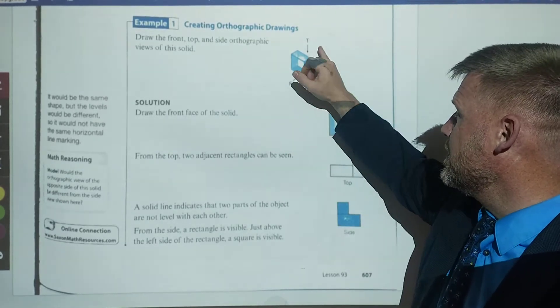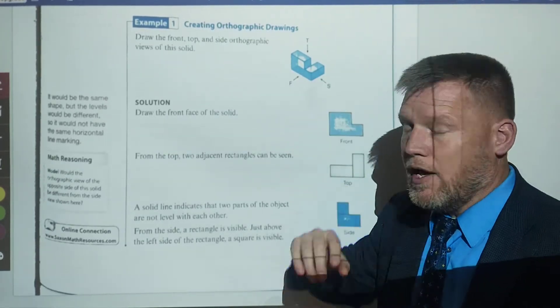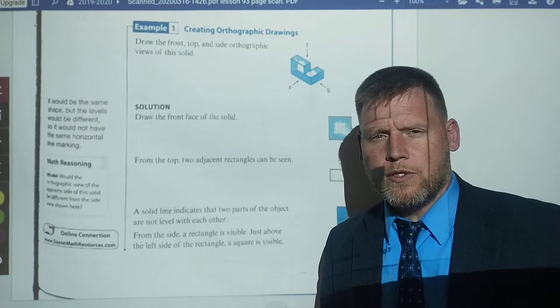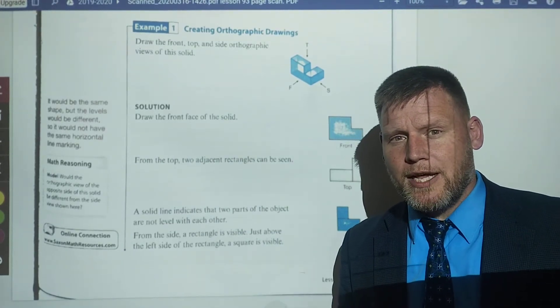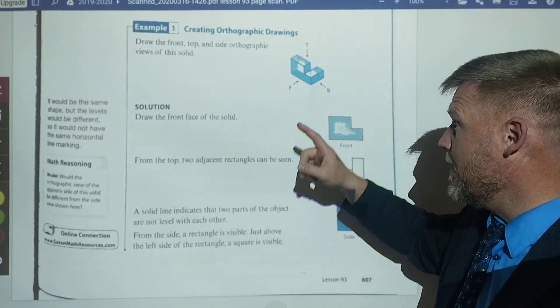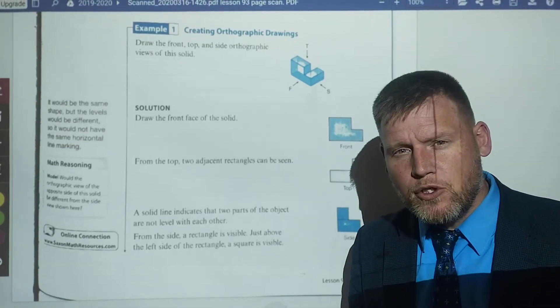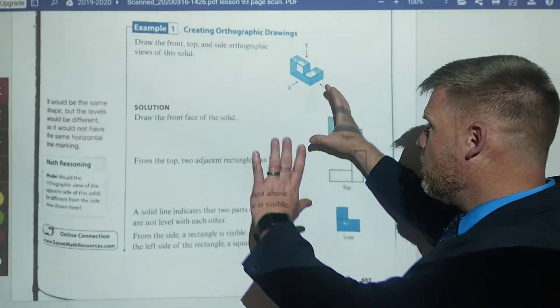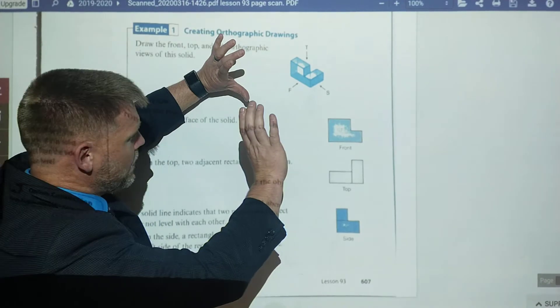These F, S, and T, that's front, side, and top. And what we're going to do in orthographic drawings, we're going to represent this figure as if it was only two-dimensional or only seeing it. So it's like we're rotating and looking just on that side.